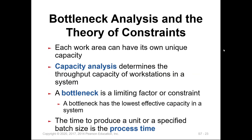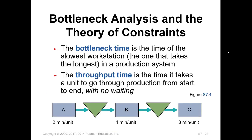Looking at the production system, each workstation can have its own unique capacity. The capacity of one workstation can affect the capacity of the whole system. To determine throughput capacity, we conduct capacity analysis. The workstation with the most limiting factor or constraint is called the bottleneck. We identify the time to process an item through each station; the total time to produce one unit is called process time. The bottleneck time is the time of the slowest workstation, while throughput time is the time a unit takes to go through production from start to finish with no waiting.